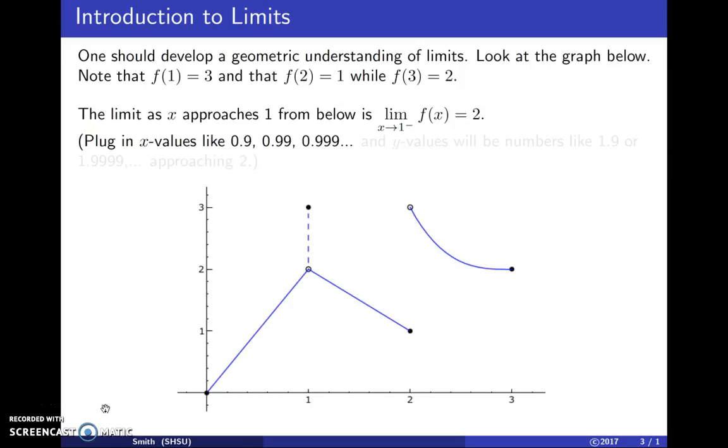Because if we plug in values just below one, like 0.9 or 0.99 and so on, the y values on the blue curve, the blue line, will be numbers like 1.9 or 1.999 and so on, approaching two. So as x approaches one from below, y approaches two.